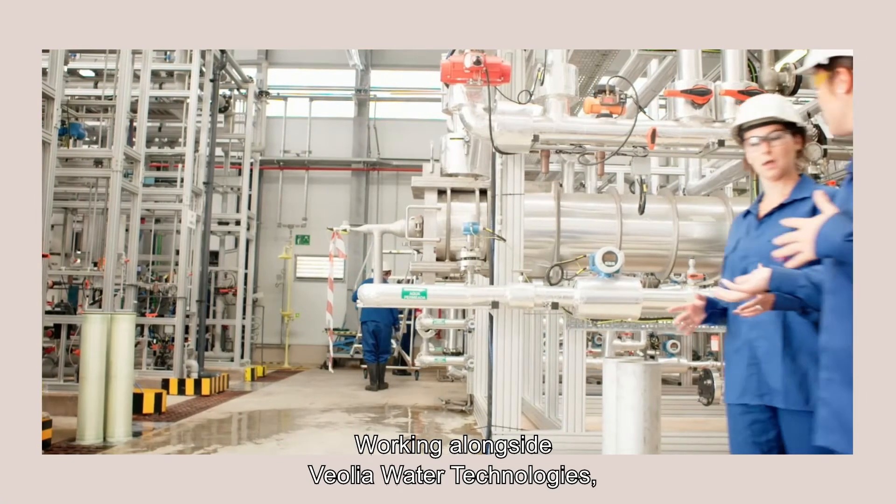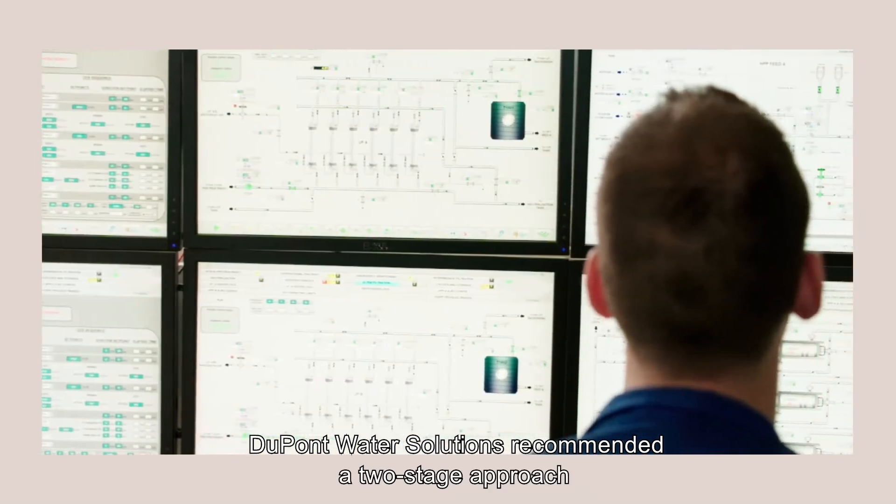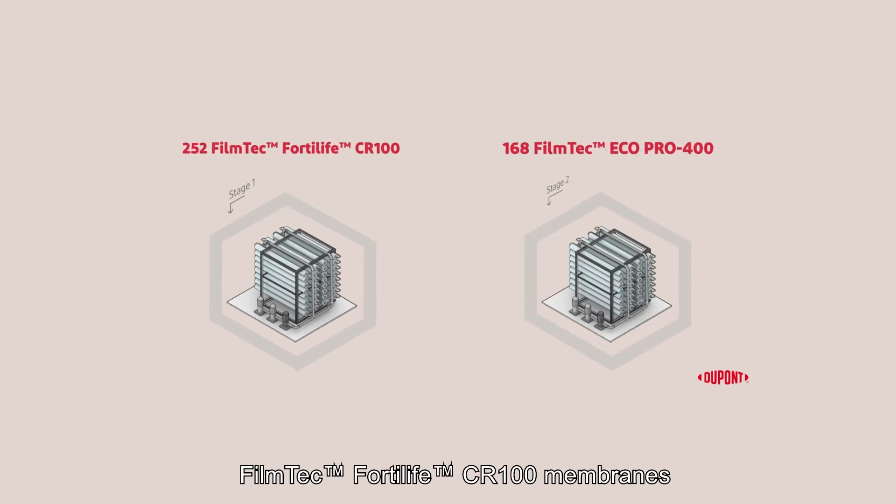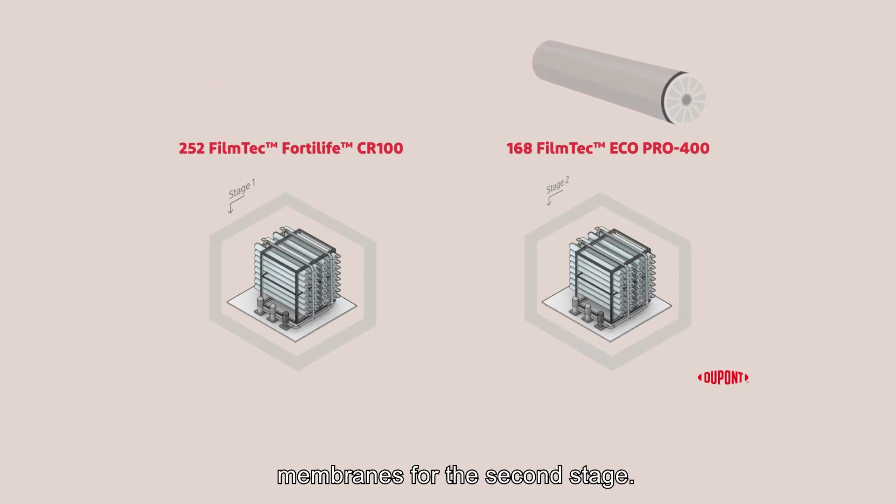Working alongside Veolia Water Technologies, DuPont Water Solutions recommended a two-stage approach using its latest generation fouling resistant reverse osmosis membrane technology. Filmtek Fortilife CR100 membranes for the first stage, followed by Filmtek EcoPro 400 membranes for the second stage.